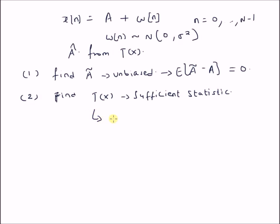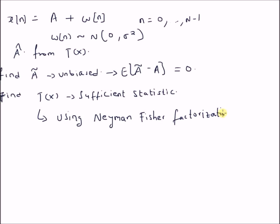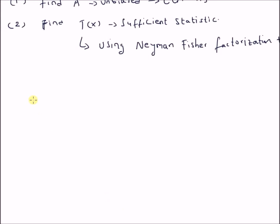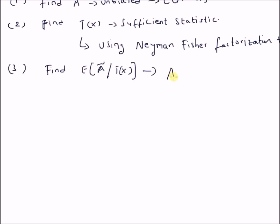This can be accomplished by using the Neyman-Fisher factorization theorem. And the final step, the third and final step, is to find the conditional expectation of A-tilde, the unbiased estimator, given the sufficient statistic T(x). This conditional expectation will be the optimal estimator, that is, it will be the minimum variance unbiased estimator.